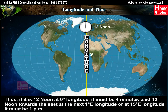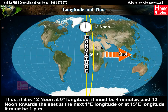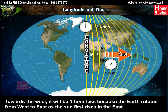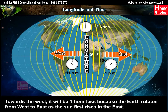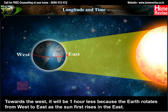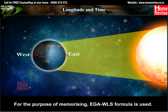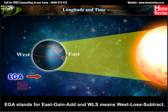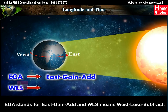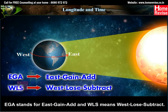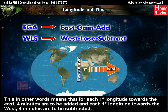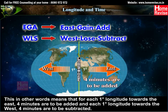If it is 12 noon at 0 degrees longitude, it must be 4 minutes past 12 noon at 1 degree east longitude, or 1 pm at 15 degrees east longitude. Towards the west, it will be 1 hour less, because the earth rotates from west to east and the sun rises first in the east. For memorizing, the EGA/WLS formula is used: EGA stands for East Gain Add, and WLS means West Lose Subtract. For each 1 degree longitude towards the east, 4 minutes are added; for each 1 degree towards the west, 4 minutes are subtracted.